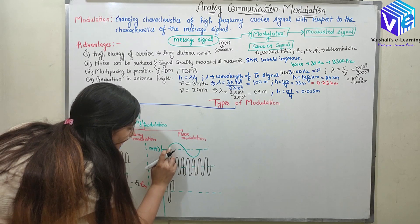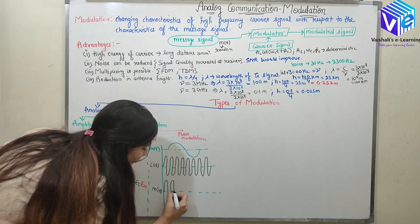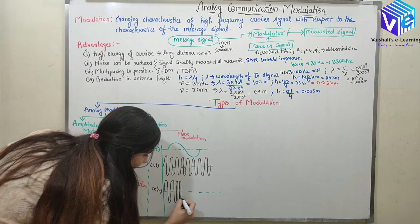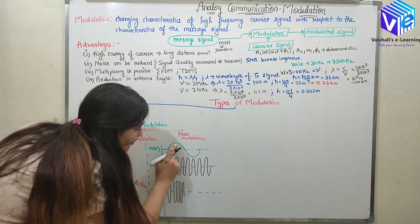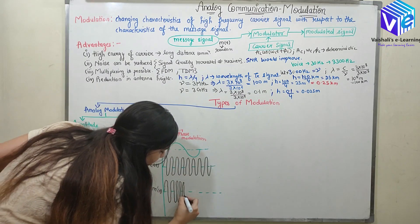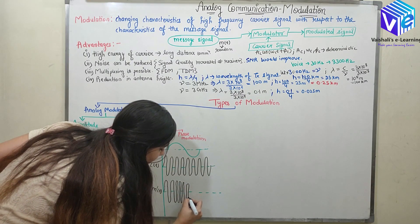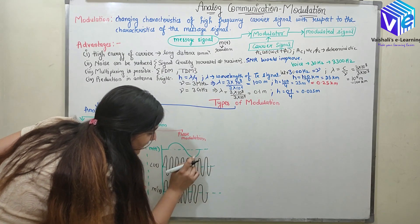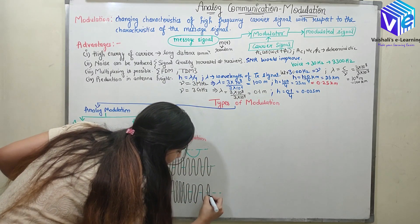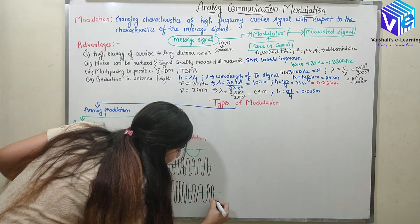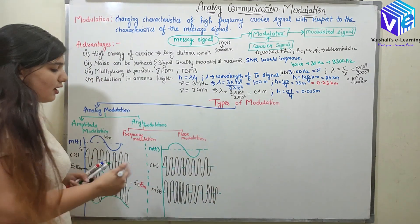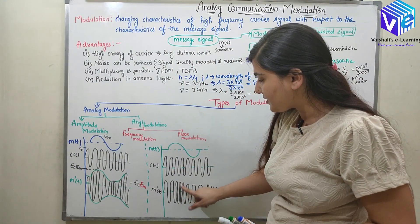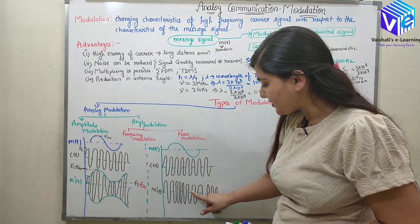From here the signal started, and here its value is increasing, so the frequency would increase. Now at this point the signal started decreasing, so its frequency would start decreasing. Here again it starts increasing, so the frequency again starts increasing.